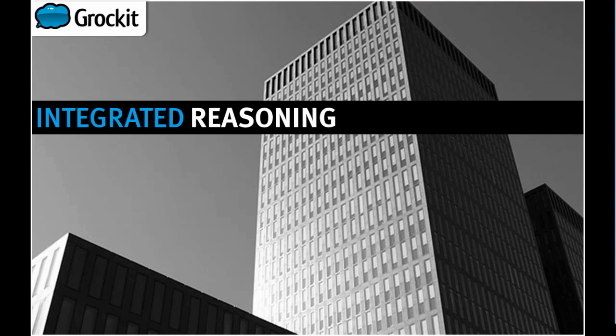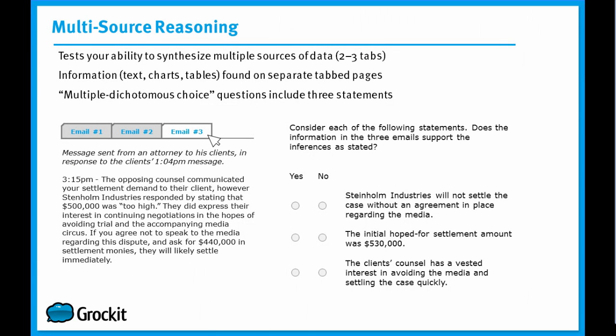Let's take a closer look at the multi-source reasoning question type by looking at an actual example. Remember that on the multi-source reasoning questions of the integrated reasoning section of the GMAT, you're going to have your ability to look at multiple sources of information tested. Often it's going to show up in terms of two to three tabs, and the tabs will work much like your internet browser, where by clicking on a tab, it will bring the information from that tab onto the screen.